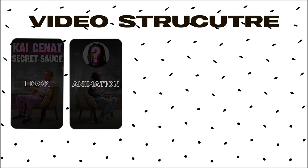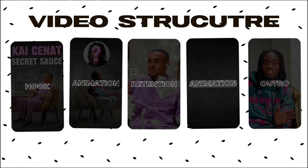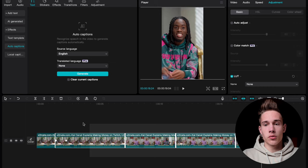This edit has five elements: the hook, then the first animation, then the retention part, then the second animation, and there's an outro or call to action. I'm gonna show you how to make each part step by step. I already have the raw video on the timeline — you can find it in the asset pack down below.